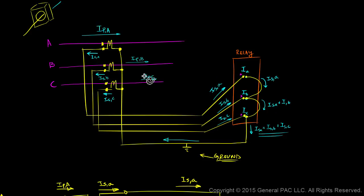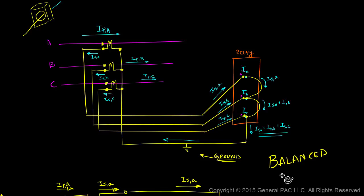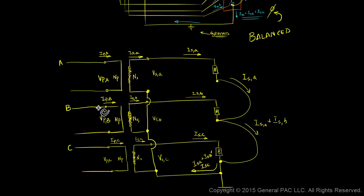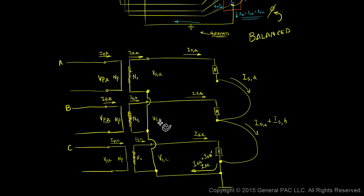In this module, we drew the three-phase CTs connected in Y and looked at the currents going into the terminal inputs of our relay. We found that the current circulating is Ia plus Ib plus Ic, and for a balanced system, Ia plus Ib plus Ic is essentially zero — meaning no current circulates for a balanced system. We also drew this circuit showing how the CTs are connected, how the X1 bushing connects to the burden or relay input terminal, and how the X2s are connected together to form a Y-connected CT. The non-polarity sides of the relay input terminals are all jumpered together and connected to the non-polarity side of our CTs.